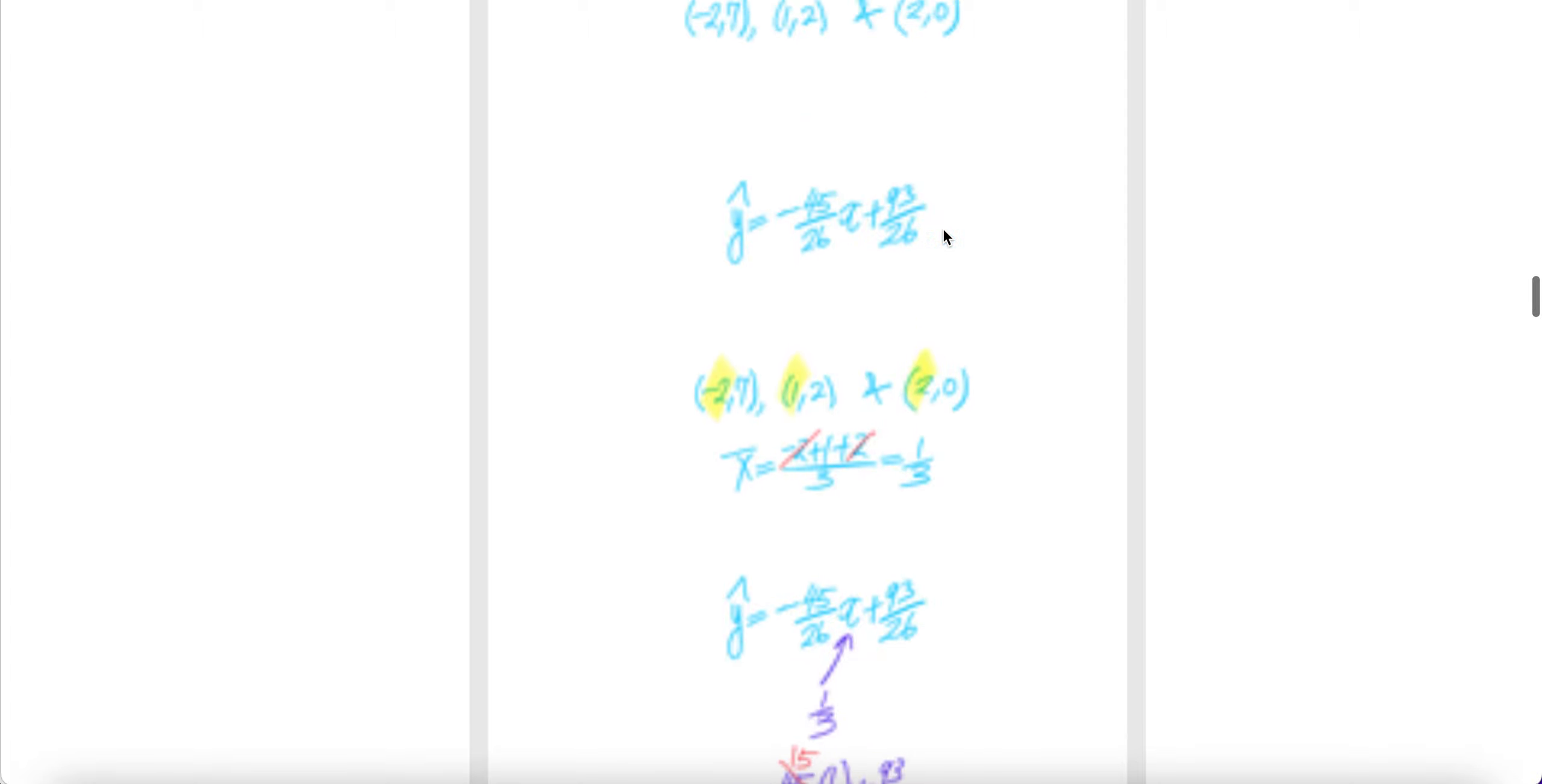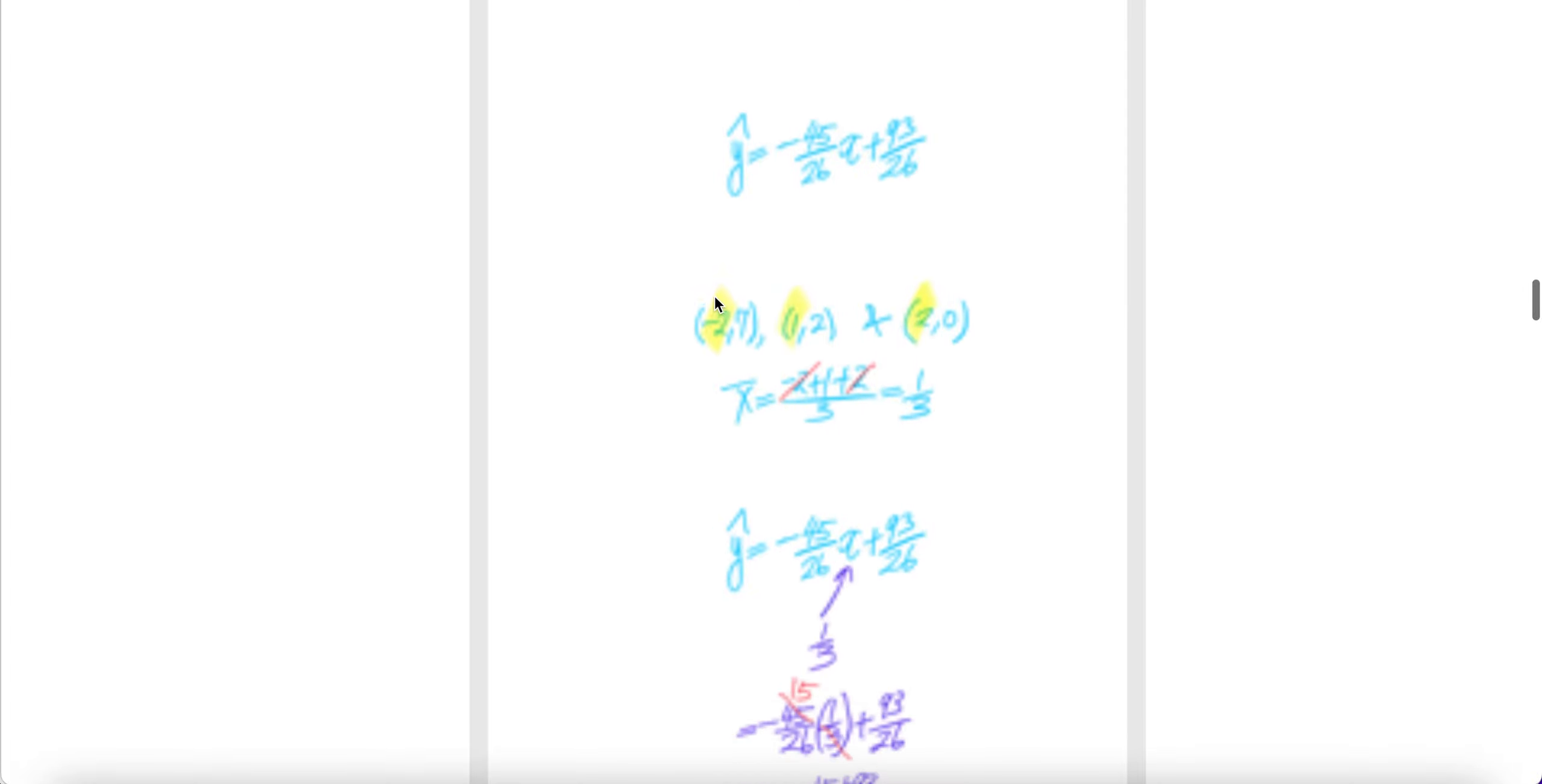These are the same three points. The yellow one is the x coordinate. So to get bar x, you just pick up minus 2, 1, 2, take the average, you get one third.